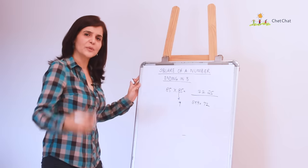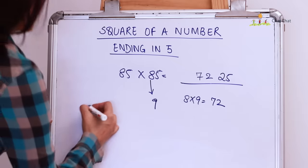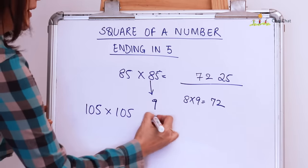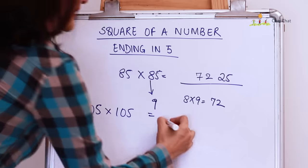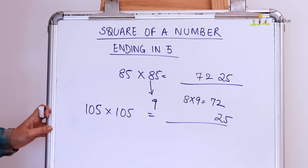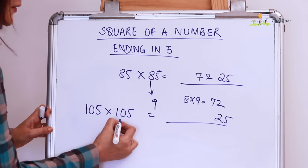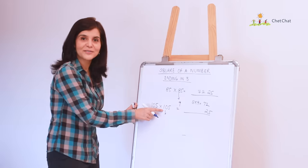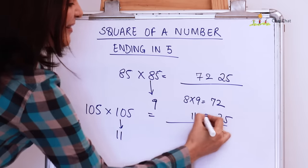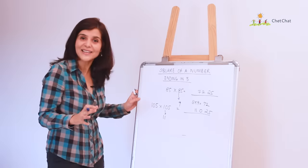Let's try this with 105. So, 105 squared and like I said, the last two digits will always be the square of 5 which is 25. And the first few digits will be 10 into, you're right, 11. So, 110. Isn't that lightning speed?